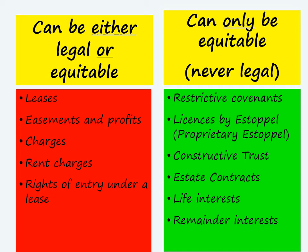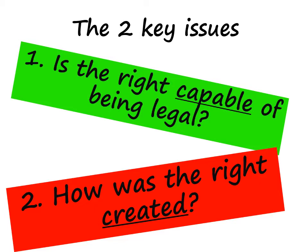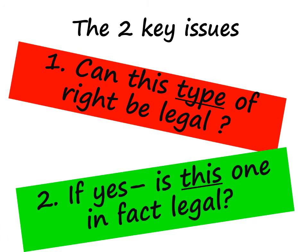To work it out, there are two key questions you need to ask, and ask them in this order. First: is this right capable of being legal? And second: how was the right created? Or to put it another way, can this type of right be legal — because some property rights can only ever be equitable. And if yes, it can be legal — is this particular property right legal? Just because this type of right is capable of being legal doesn't mean that this particular one is.